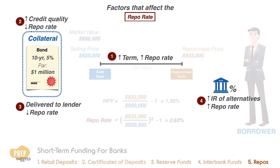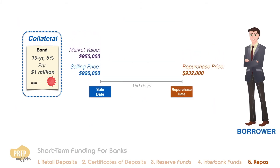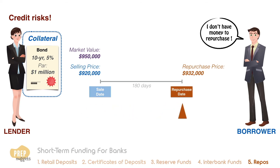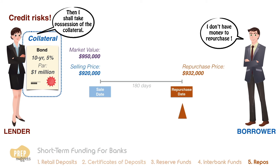Repurchase agreements, like any other form of debt instruments, are not without credit risk to the lender. The counterparty can default — in this case, if the borrower fails to repurchase the collateral on the repurchase date. The compensation to the lender is that she can take possession of the collateral.